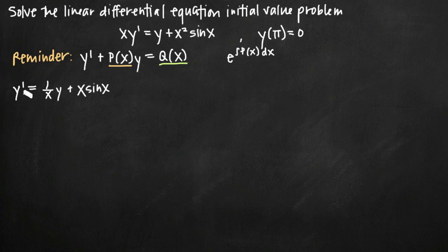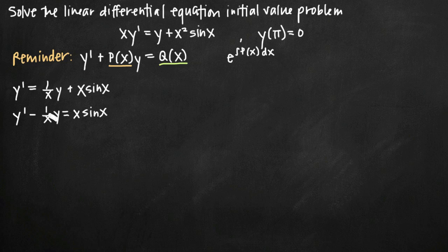Now we have y prime on its own, but in standard form we also need the p(x) times y term on the left hand side. So we subtract 1 over x times y from both sides and get y prime minus 1 over x times y is equal to x sine of x. Now we have our equation in standard form. Our p(x) function is negative 1 over x, acting as a coefficient on the y term, and on the right hand side q(x) is x sine of x, with no y's or y primes remaining.